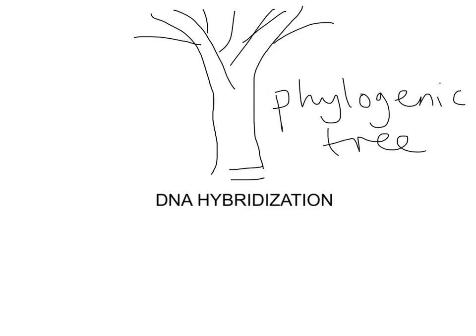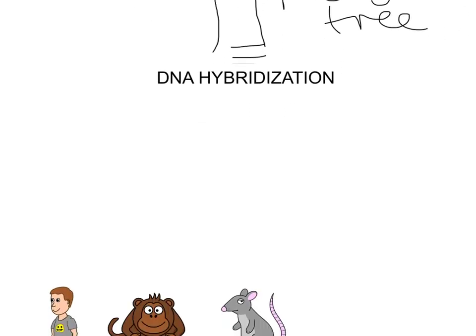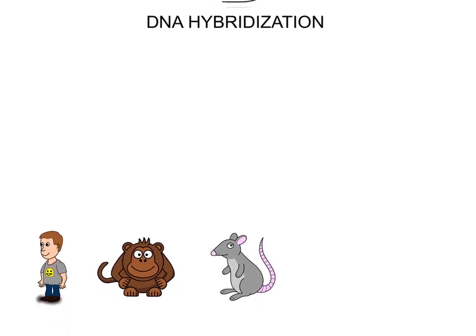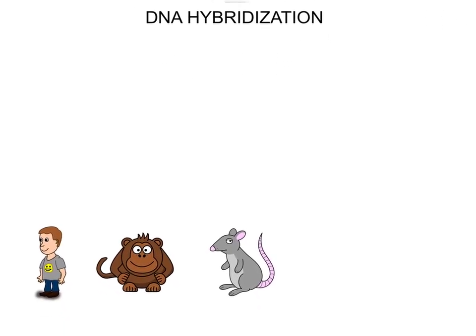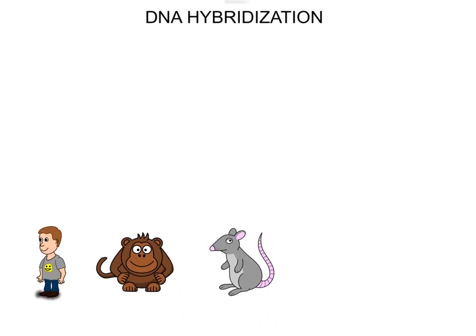So let's get into what the process actually involves. We're going to use three examples: DNA from a human, from a monkey, and from a rat. We want to look at how genetically similar they are — or how closely related the monkey and the rat are to the human.